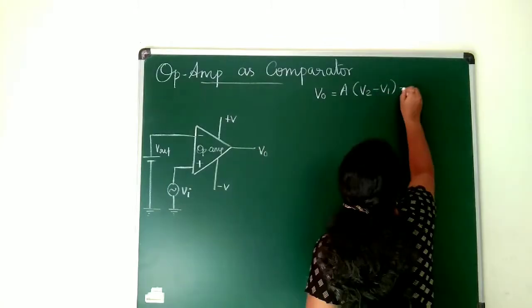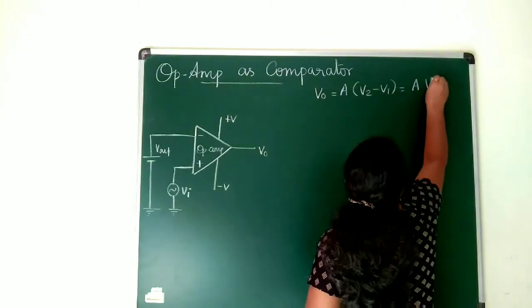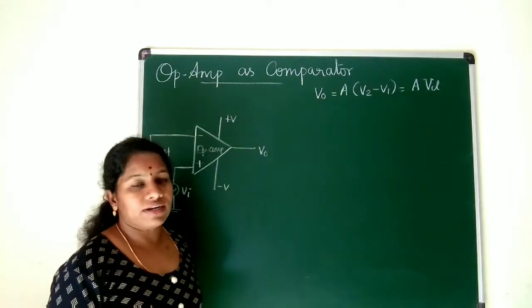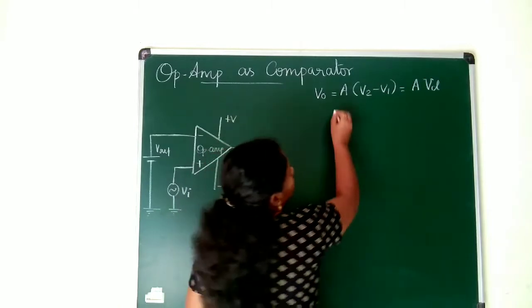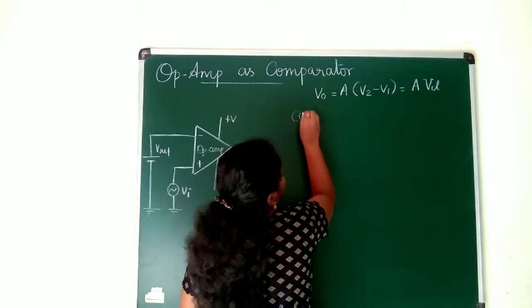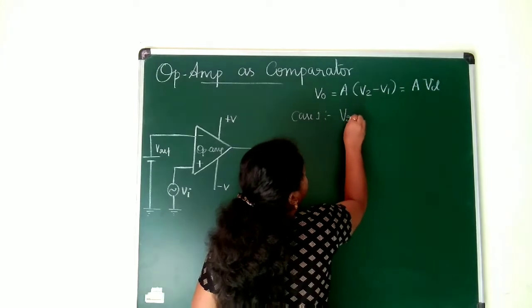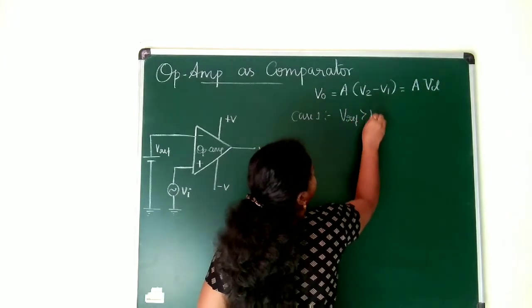So this can be written as A into VD. V2 minus V1 I can write as VD, differential voltage. Now what I do? I just take case 1. Case 1 says that V reference is greater than VI.